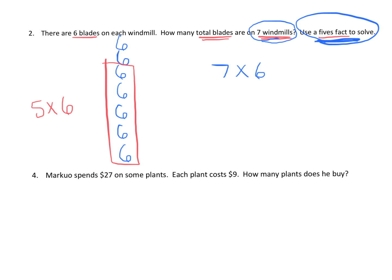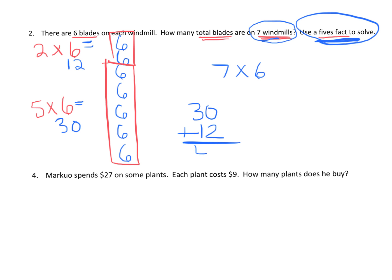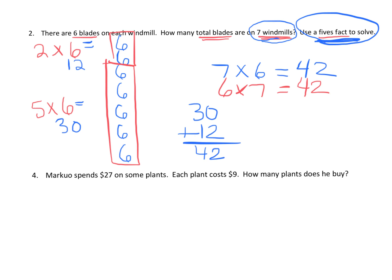We split the seven windmills: five times six equals 30 (from our fives: 5, 10, 15, 20, 25, 30), and two times six equals 12. So seven times six equals 30 plus 12, which is 42. And now that we know seven times six is 42, we also know by the commutative property that six times seven is 42.